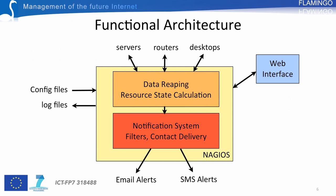This slide shows the functional architecture of Nagios. This architecture is based on two building blocks. The first is a data processing system responsible for collecting the results of checks and calculating from these results the status of resources, hosts, and services. The second is a notification system capable of sending alerts to administrators, integrating filtering and escalation mechanisms. Alerts are typically sent through emails or SMS.